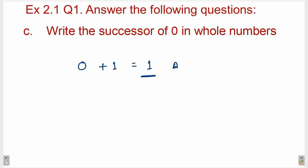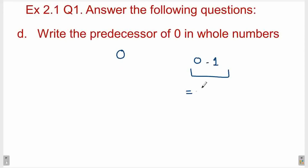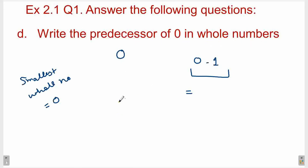यह भी हम लोग introductory video में already discuss कर चुके हैं। यहाँ पे हम लोग again इसको discuss करते हैं। So given whole number क्या है? 0. Predecessor क्या होता है? Predecessor हम लोग कैसे find out करते हैं? कि जो भी हमारे पास given number है उसमें से हम लोगों ने 1 को minus करना होता है। अब देखो जब हम 0 में से 1 को minus करेंगे तो जो हमारा answer आएगा वो whole number नहीं होगा। Why? Because smallest whole number क्या है हमारे पास? 0. तो 0 में से अगर हम लोग कोई भी number minus करेंगे तो जो result आएगा that will not be a whole number. So therefore, predecessor of 0 in whole numbers is not possible.